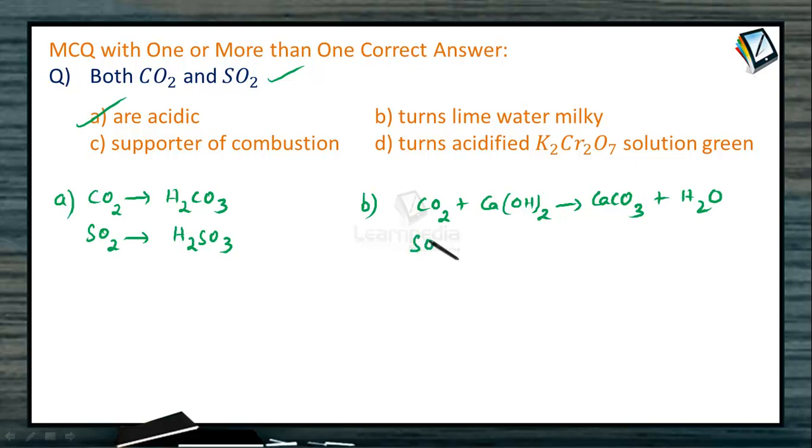But when you take the case of sulfur dioxide, when that is passed through calcium hydroxide, then also we get the white precipitate. Now, which is because of calcium sulfide, not calcium carbonate. And here also we get H2O.